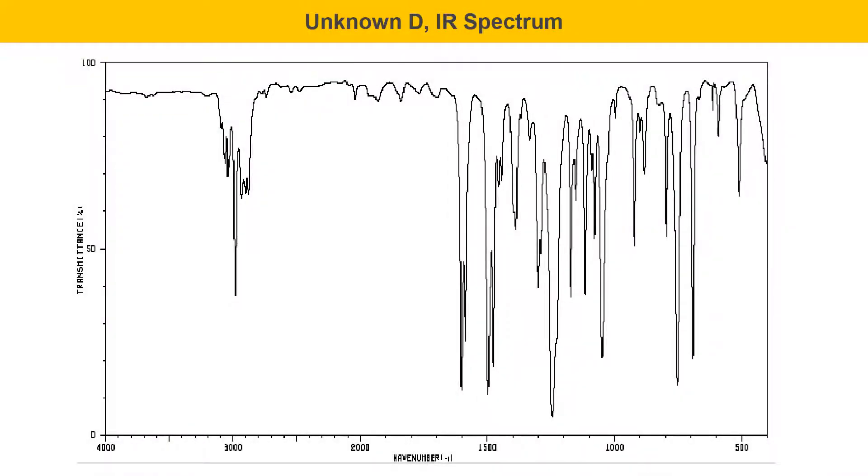Here's unknown D's IR spectrum. One of the things I'll tell you is that there is a peak here at 1500 that's significant to get. The fingerprint region kind of starts at about 1500, but if you see a peak at 1500, that could be something significant. So you should try to figure that out. There's one particularly strong peak in the fingerprint region at 1250 that you might find useful as well.